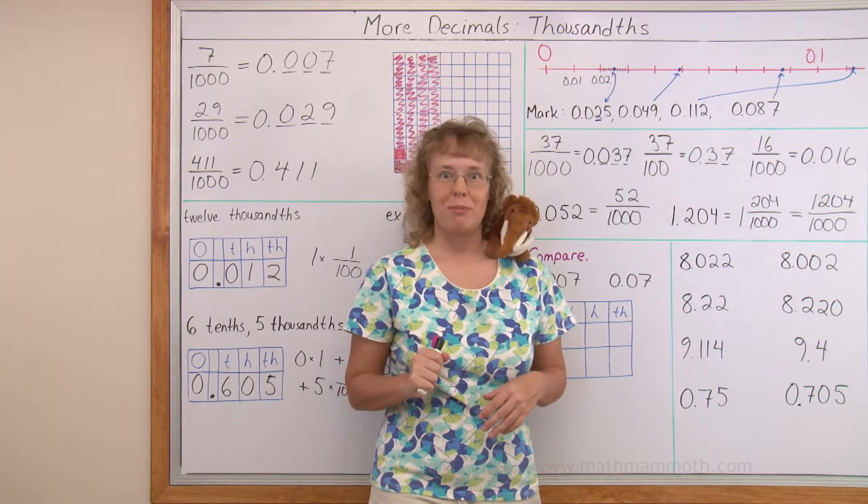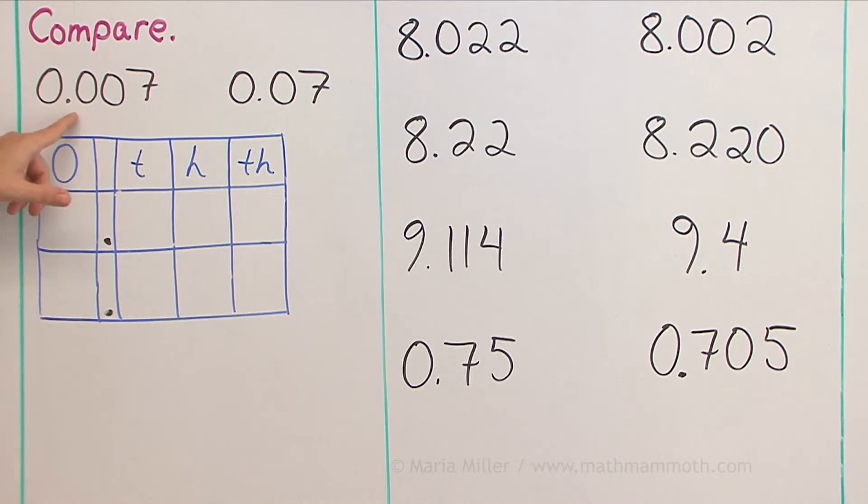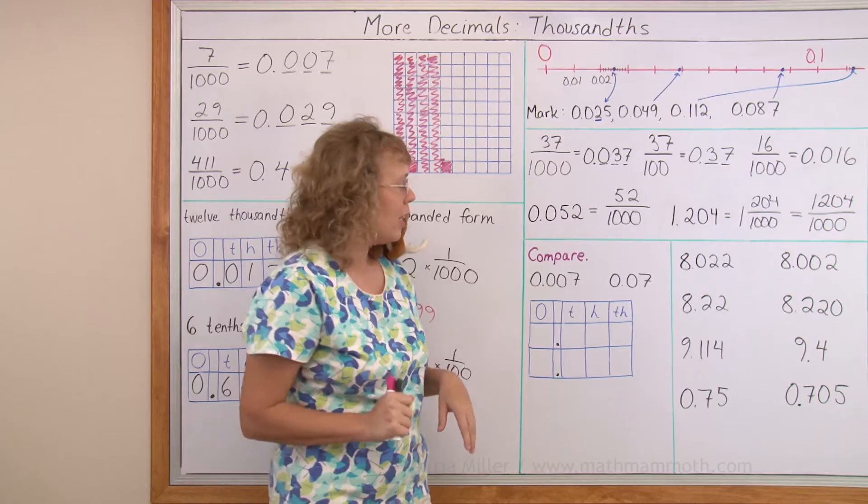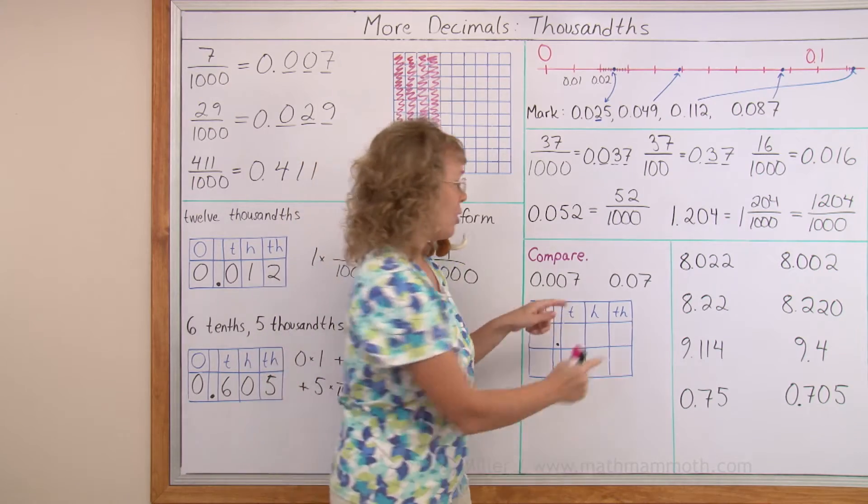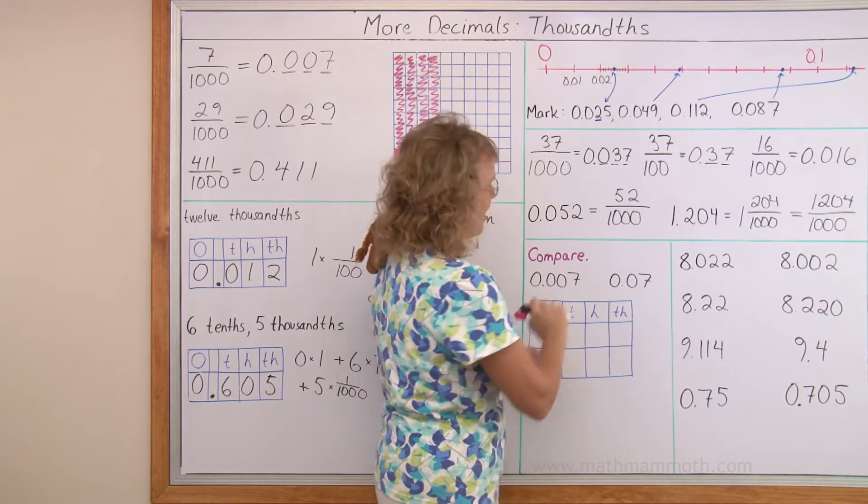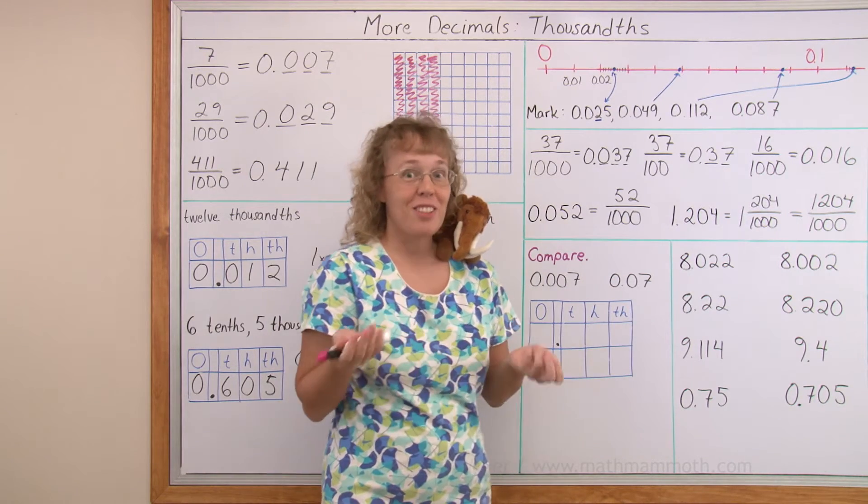Next, we're going to compare some decimals. The first comparison is this: 0.007 and 0.07. Which one is more? Or are they equal? You know, some students think these two decimals are equal because they both seem to have just 7 on the other side of the decimal point.